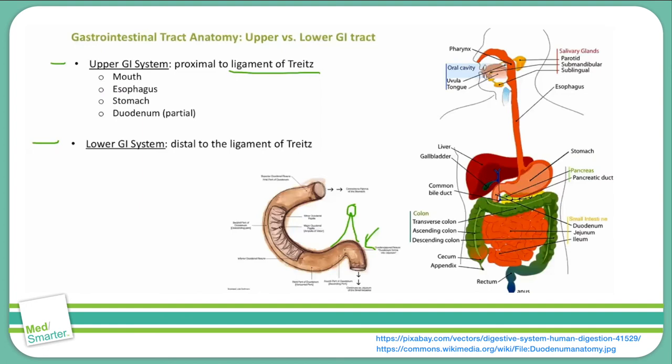The lower GI tract is composed of the remainder of the duodenum, the jejunum, the ileum, the colon, the rectum, and the anus.